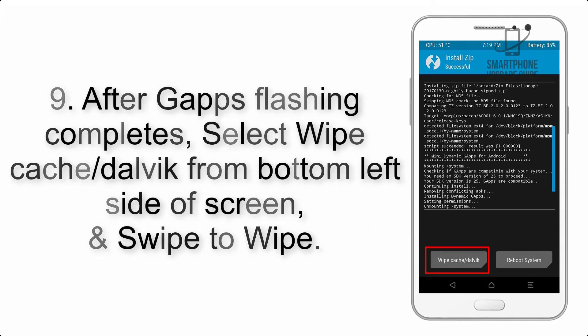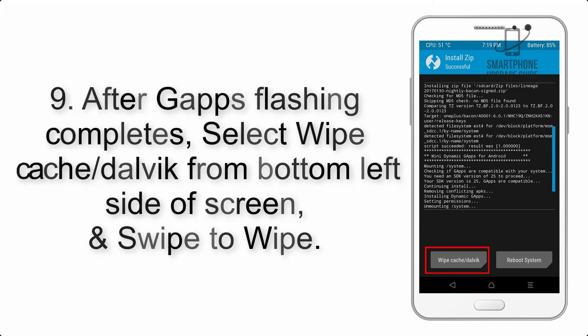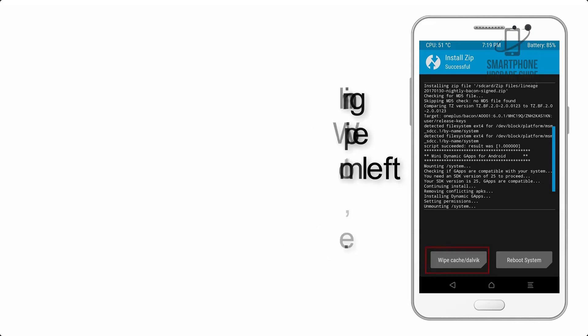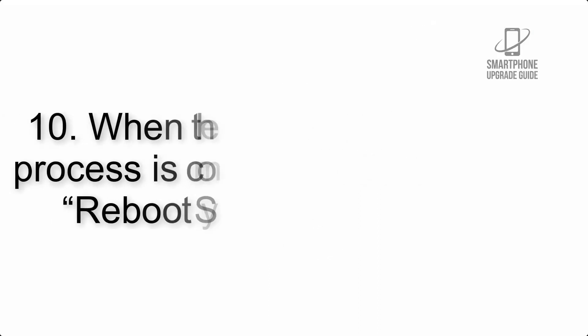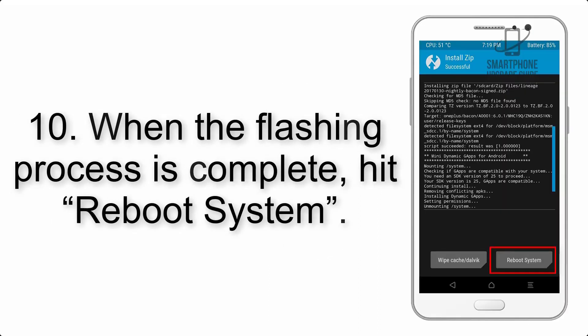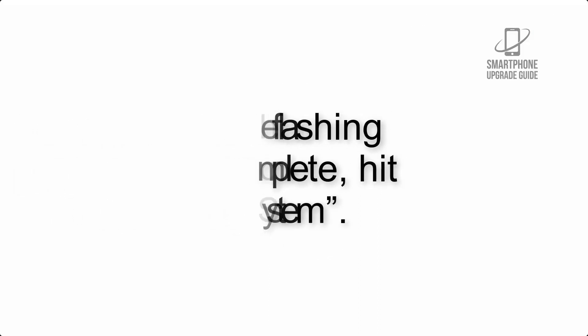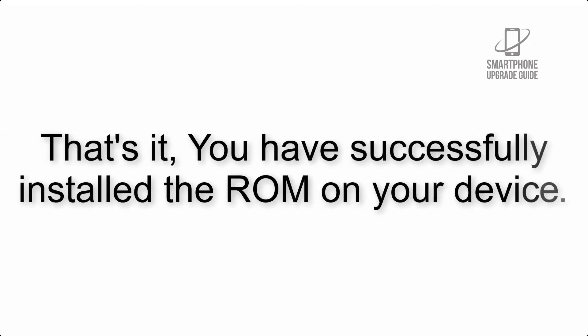Step 9: After GApps flashing completes, select Wipe Cache and Dalvik from the bottom left side of the screen and swipe to wipe. Step 10: When the flashing process is complete, hit Reboot System. That's it — you have successfully installed the ROM on your device.